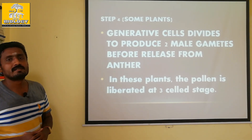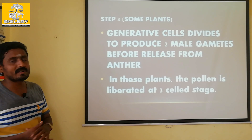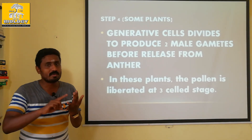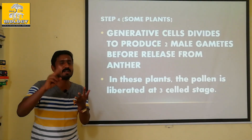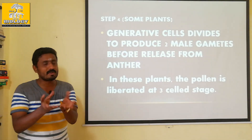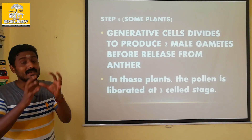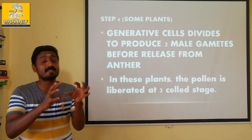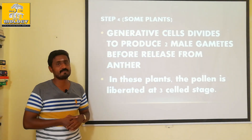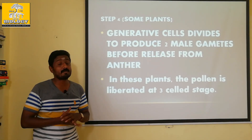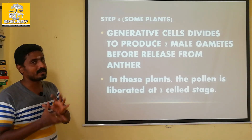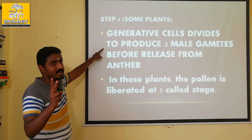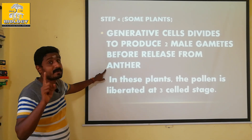If there are 3 molecules, the cross-wall forms 3 cells. In the vegetative cell, the male gametes are 2 male gametes. Generative cells divide to produce 2 male gametes before release from the anther.